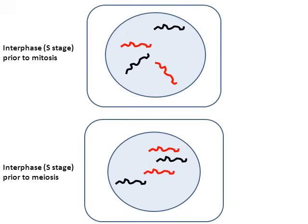Here we have two cells. The cell on the top will eventually go through mitosis, and the cell on the bottom will eventually go through meiosis. Right now, both of these cells are in interphase. Interphase takes place prior to mitosis, and interphase takes place prior to meiosis.